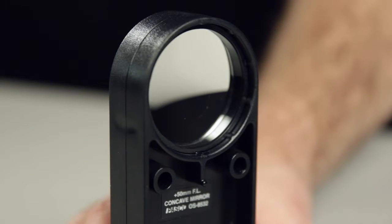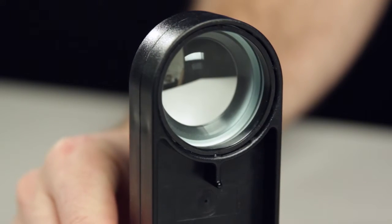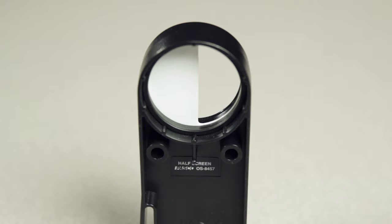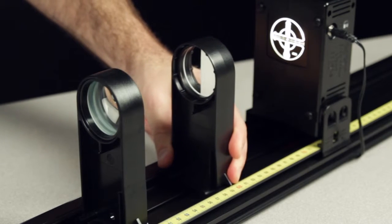The concave mirror accessory has two components: a two-sided mirror, one side concave and the other convex, and a half screen designed to observe real images projected from the concave mirror.